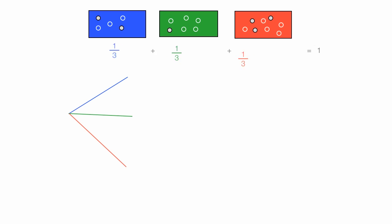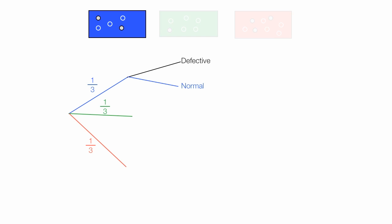Once I go down the blue path or pick a blue box, there's a chance to pick a part that is normal and also a chance to pick a part that is defective. There are two defective parts out of the blue box and three normal parts. The chance of getting a defective part is two out of five. The chance of picking a normal part is three out of five, since there are three normal parts.